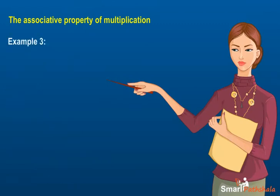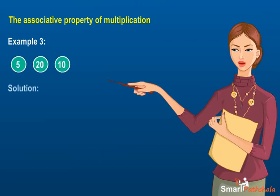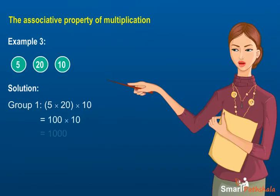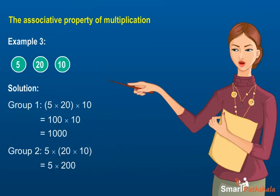Example 3: Explain the associative property of multiplication for the whole numbers 5, 20, and 10. Group 1: (5 × 20) × 10 = 100 × 10 = 1,000. Group 2: 5 × (20 × 10) = 5 × 200 = 1,000.